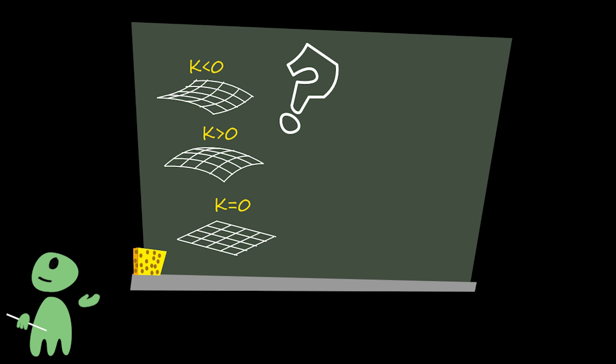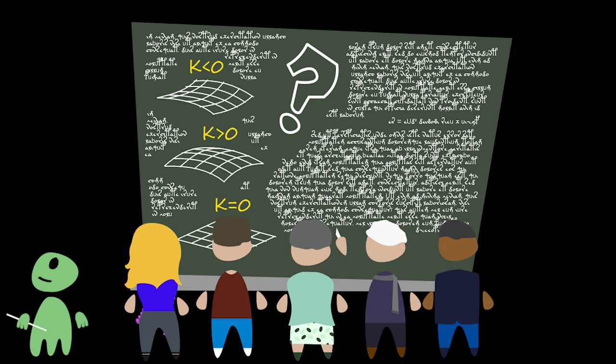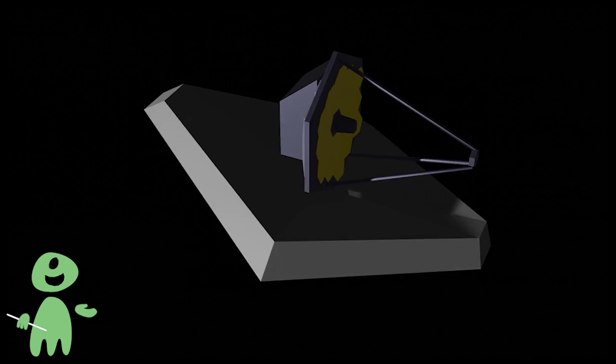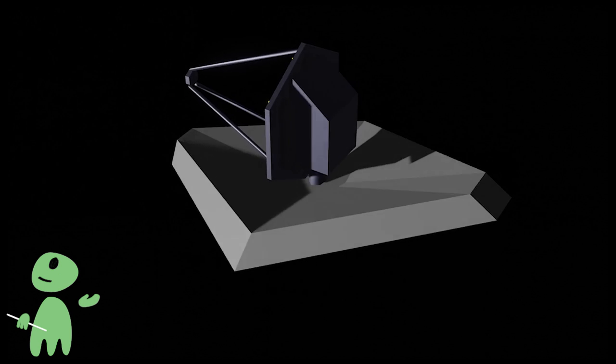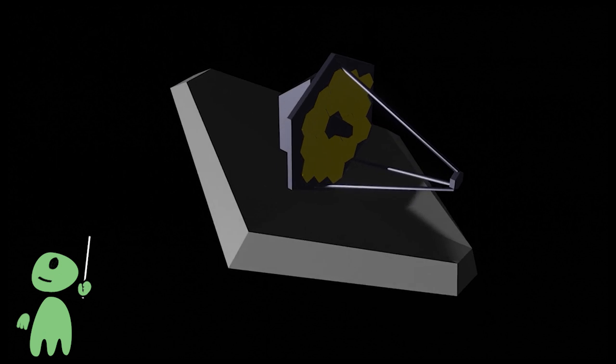In conclusion, nobody on this planet knows what shape the universe has, not even whether it's flat or a little bit curved. But earthling scientists are working hard on the problem. And, who knows, maybe their shiny new James Webb Space Telescope will bring the answer. After all, it has been built to look far into the depths of space and time. And truth, as they say, is probably somewhere out there.